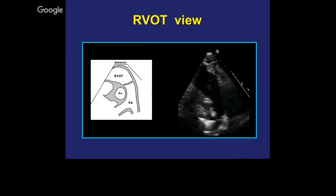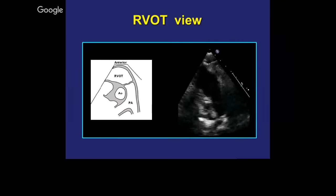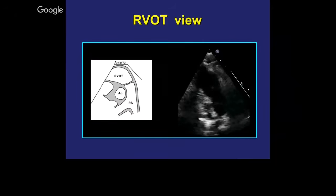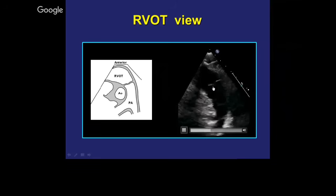Here will be the pulmonary valve at the RVOT. You can see it flicking in and out there right in the middle — pulmonary valve right there. And you can see the right pulmonary artery and the left pulmonary artery as it bifurcates.